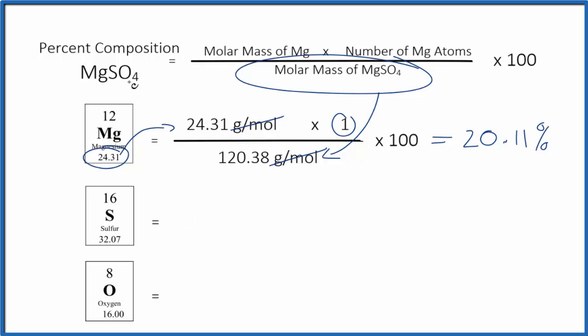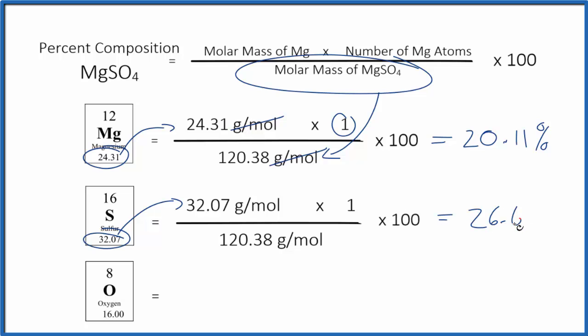We do the same thing to find the percent composition by mass for the sulfur in MgSO4. We take our molar mass here. We multiply by the number of sulfur atoms. We only have one. Divide all of this by the molar mass for MgSO4, multiply by 100, and we get 26.64%. So that's the percent composition of the sulfur in magnesium sulfate.